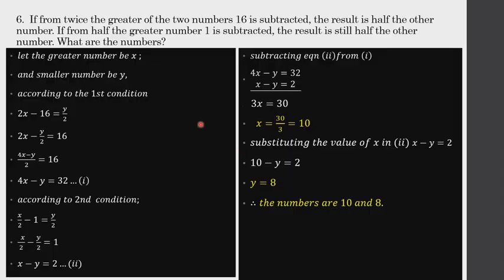The first question we are discussing today is: if from twice the greater of two numbers, 16 is subtracted, the result is half the other number. We have two numbers — one greater, one smaller. Twice the greater means two times x. If we subtract 16, the result is half the other number. The smaller number is taken as y, so: 2x minus 16 equals y by 2.